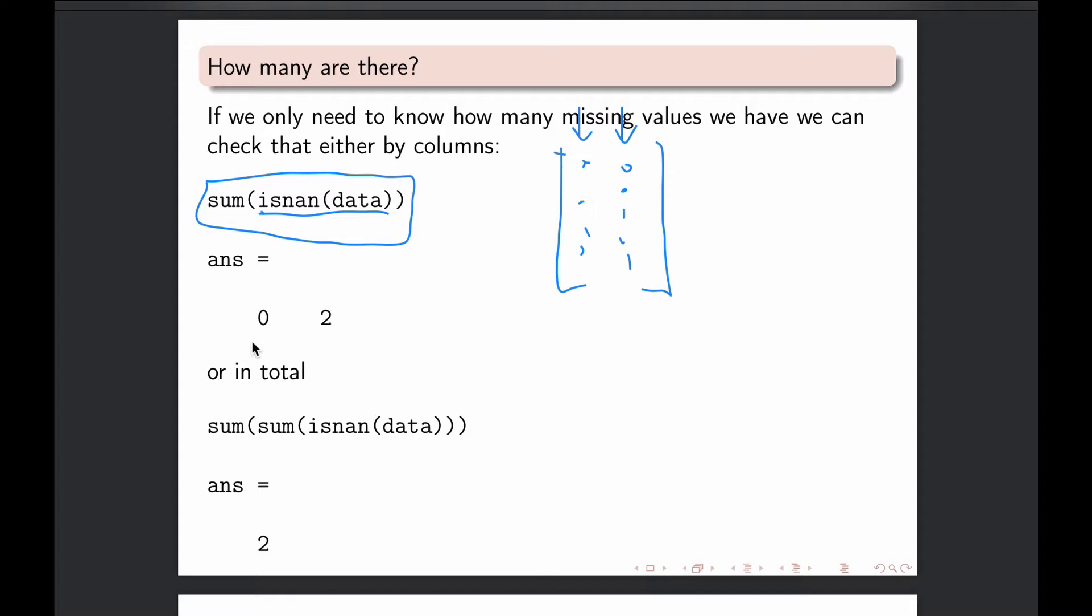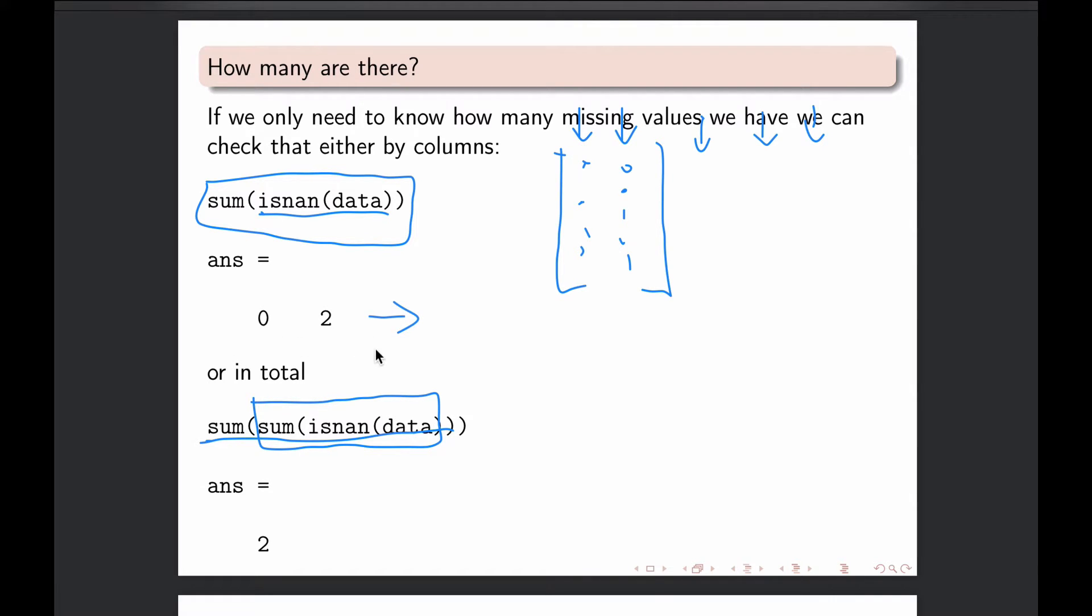If you want to know the result from your entire data matrix all together, if you, for instance, you have many, many columns as well, and this SUM of isNAN data would give you still many answers here for each column separately, then you can use DOUBLE SUM. So first, when MATLAB executes this inner part, of course, it will create a vector, which has the individual sums of each column, but another SUM will then sum up that vector. So for this case, we had the answer in the end is two of this DOUBLE SUM.